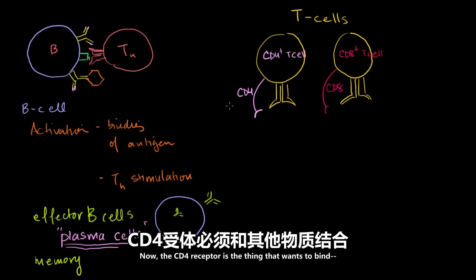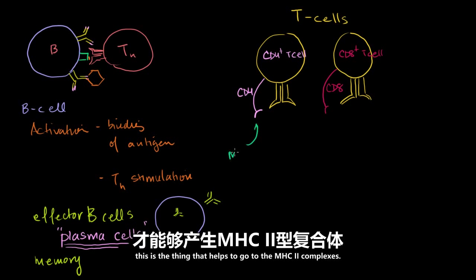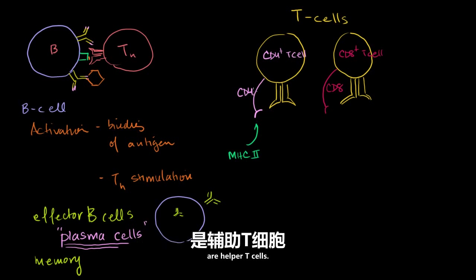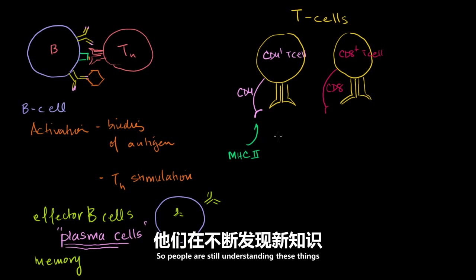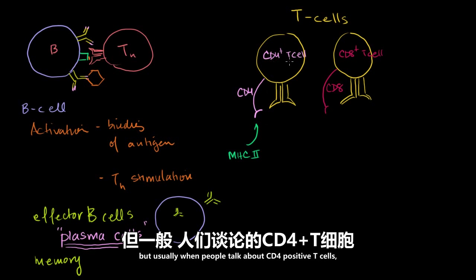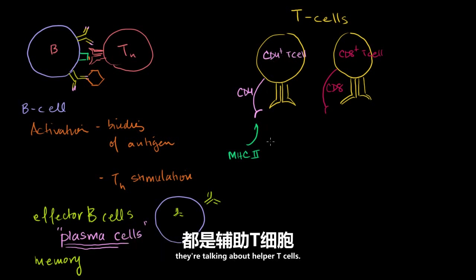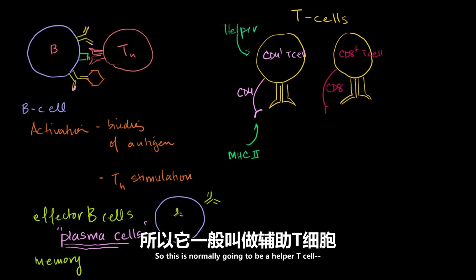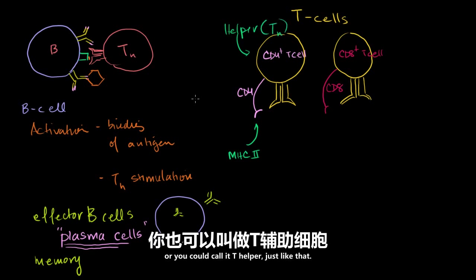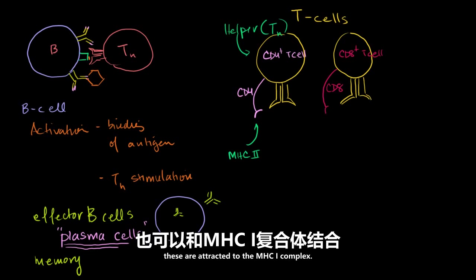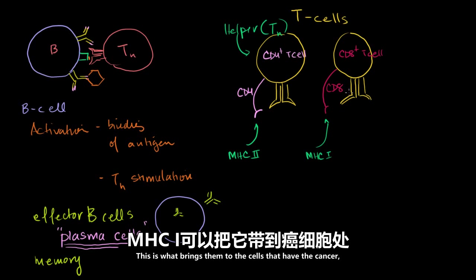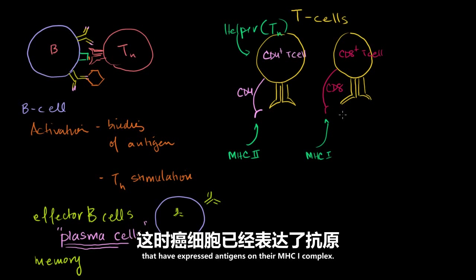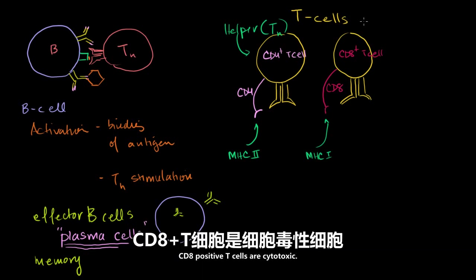Now, the CD4 receptor is the thing that wants to bind. This is the thing that helps to go to the MHC2 complexes. So most CD4 T cells are helper T cells. So this is, you know, most of the time. And I want to make it very clear. Immunology is a very, I mean, this field, people are discovering things on a regular basis. So people are still understanding these things, and there's all sorts of special cases. But usually when people talk about CD4 positive T cells, they're talking about helper T cells. So this is normally going to be a helper T cell. Or you could call it a T helper, just like that. Likewise, the CD8 proteins, these are attracted to the MHC1 complex. These are attracted to MHC1.